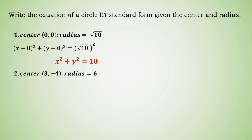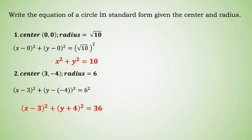On the next example, if the center is at the point 3 comma negative 4 and the radius equals 6, we apply the same formula replacing h with 3 and k with negative 4. So we get x minus 3 quantity squared plus y minus negative 4 quantity squared equals 6 squared. Simplified: x minus 3 quantity squared plus y plus 4 quantity squared equals 36.